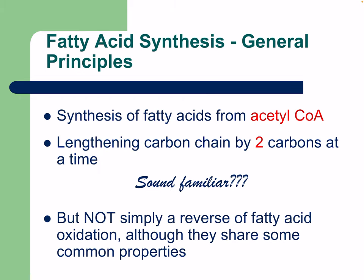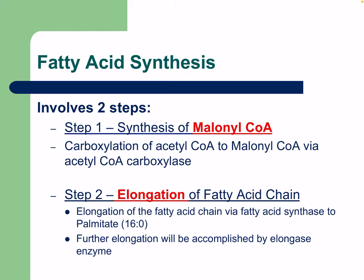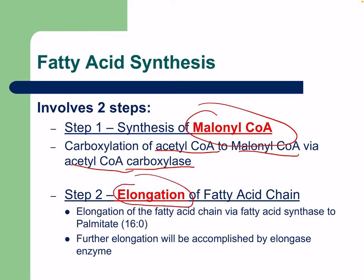The synthesis of fatty acids from acetyl-CoA involves lengthening the carbon chain by two carbons at a time, but it is not simply a reverse of beta oxidation — they share some common properties but are not identical. Fatty acid synthesis involves two steps: step one is the synthesis of malonyl-CoA through carboxylation of acetyl-CoA by acetyl-CoA carboxylase; step two is elongation of the fatty acid chain via fatty acid synthase.